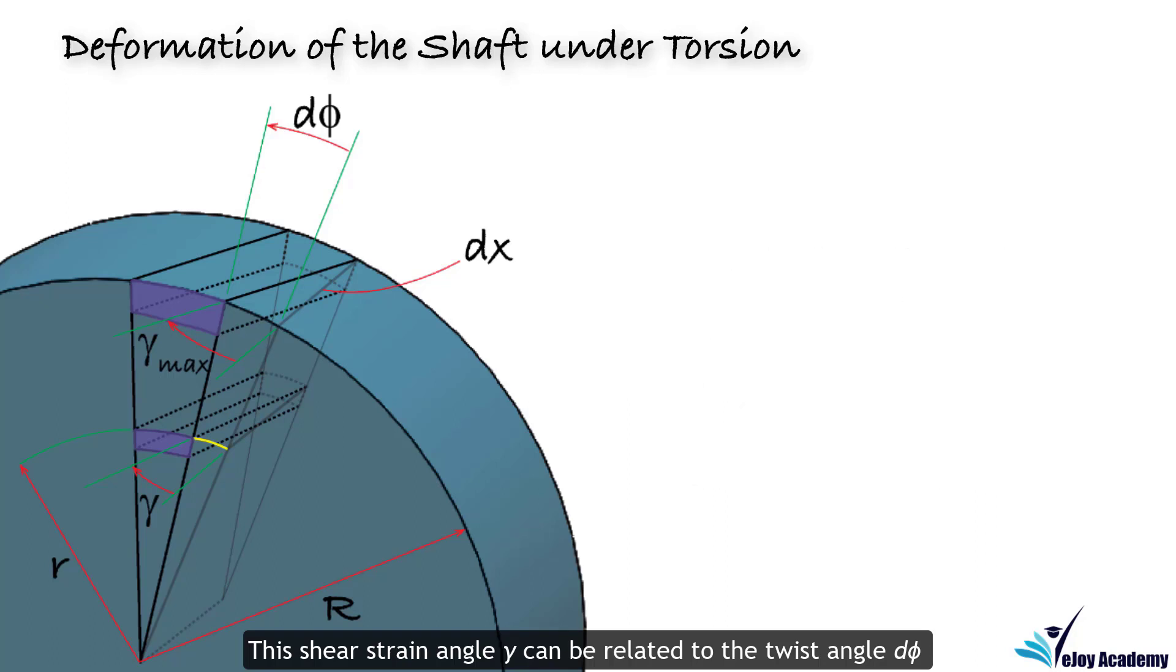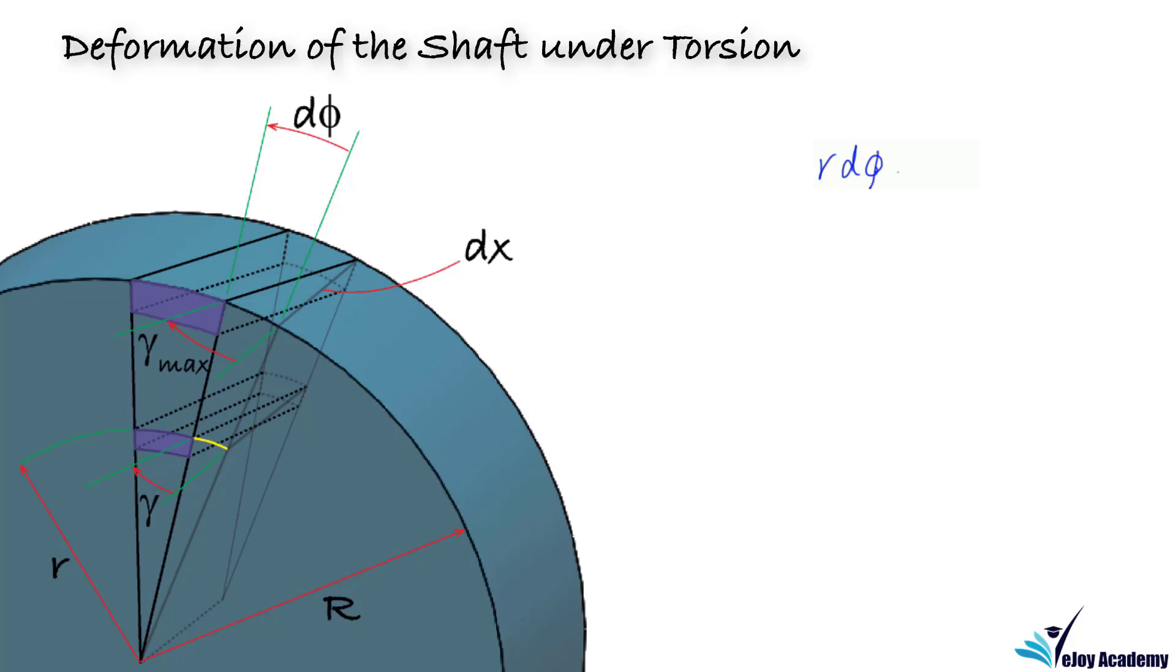This shear strain angle gamma can be related to the twist angle d phi by the length of the yellow arc as r times d phi is equal to dx times gamma, or gamma is equal to r times d phi over dx.